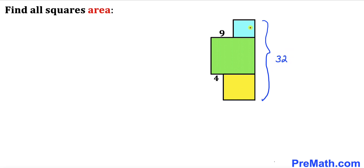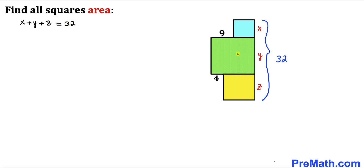Now let's label the side lengths. I'll call the side length of the blue square x, the side length of the green square y, and the side length of the yellow square z. Since the squares share sides, the sum x plus y plus z must equal 32. Because each figure is a square, opposite sides are equal, so x, y, and z also represent the respective heights of the squares.